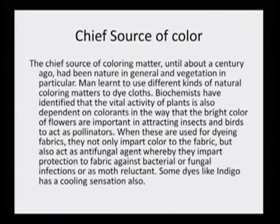What are the chief sources of color? The chief sources of coloring matter until about a century ago has been nature in general and vegetation in particular. Man learned to use different kinds of natural coloring matters to dye clothes. Initially there were no synthetic dyes, so the main source of dyes for ancient people were from nature — particularly from plants. Vegetation was the main source for the coloring matter.